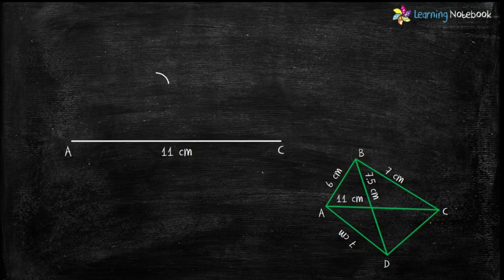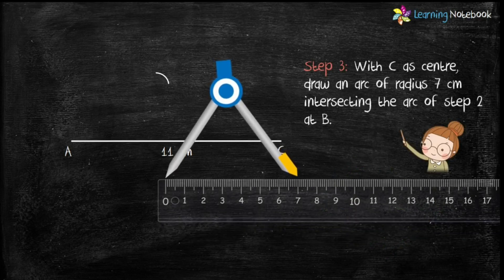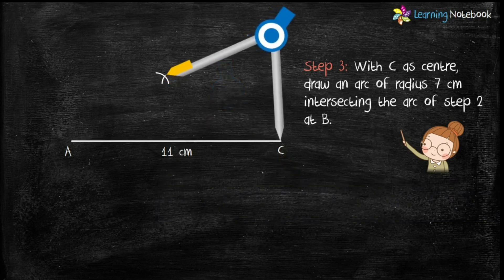Again, look at the rough sketch. This time let's construct side BC which is given as 7 cm. So students, for step 3, open the compass with radius 7 cm and with C as center draw an arc.